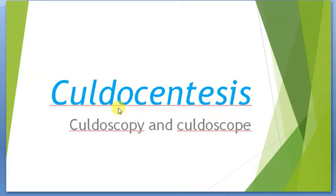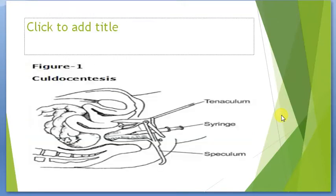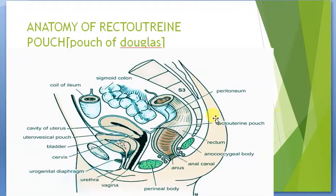This is a very important technique we usually perform in females, because the sac from which we drain the fluid is present in the female. This pouch or sac we call the recto-uterine pouch, or the pouch of Douglas. Here we will see this pouch — what it means, and what it looks like. We have a diagram showing the sagittal section of the pelvic cavity.